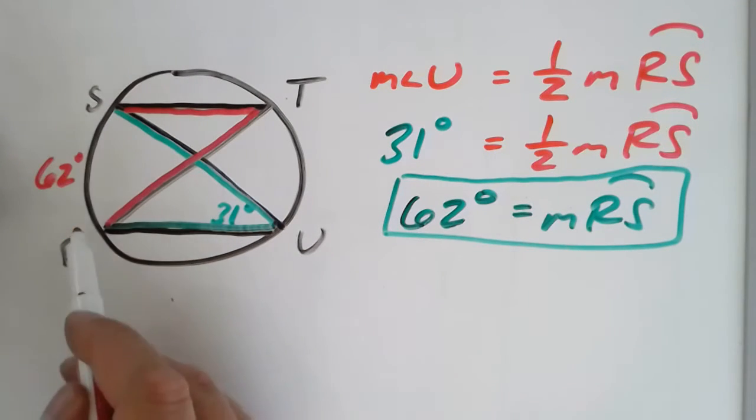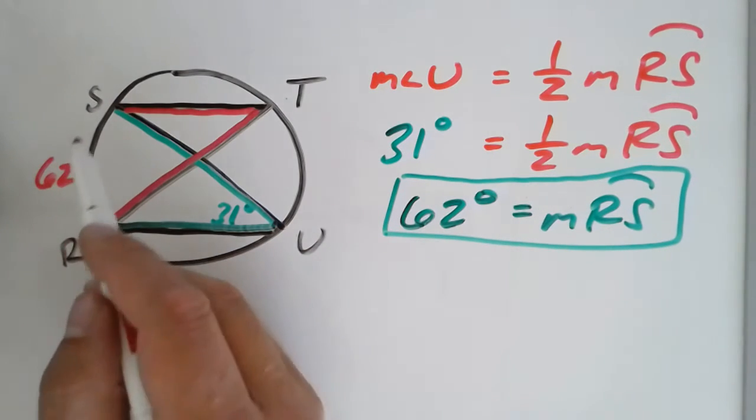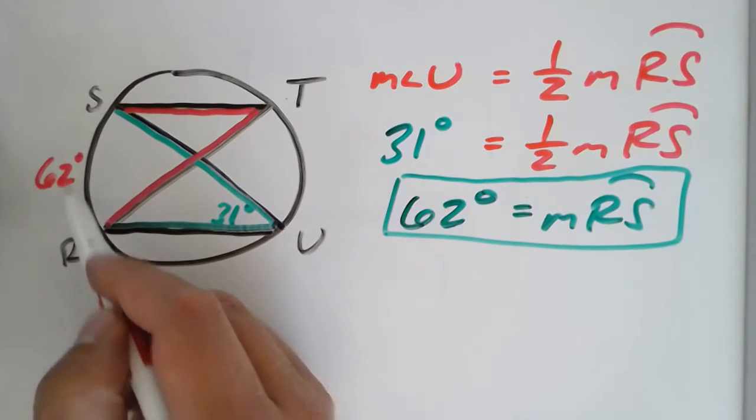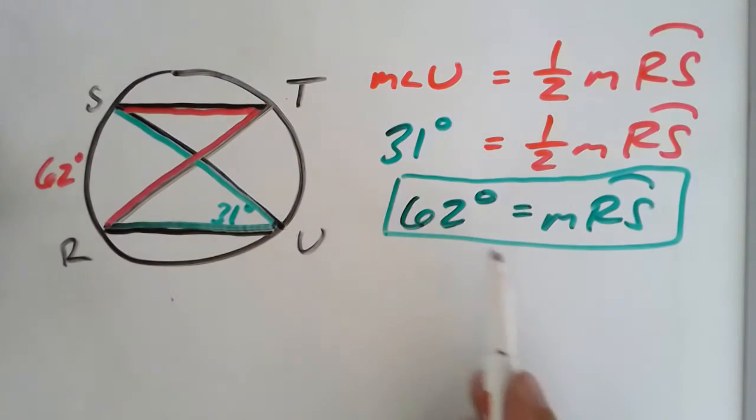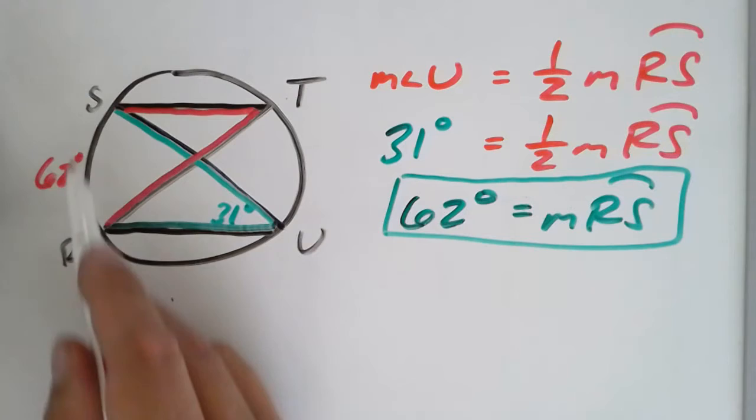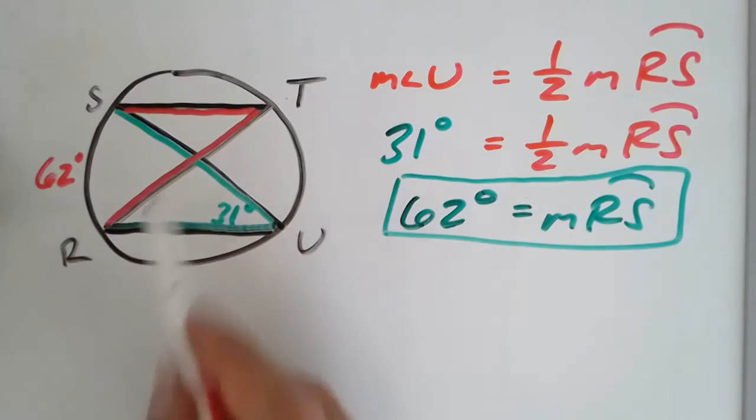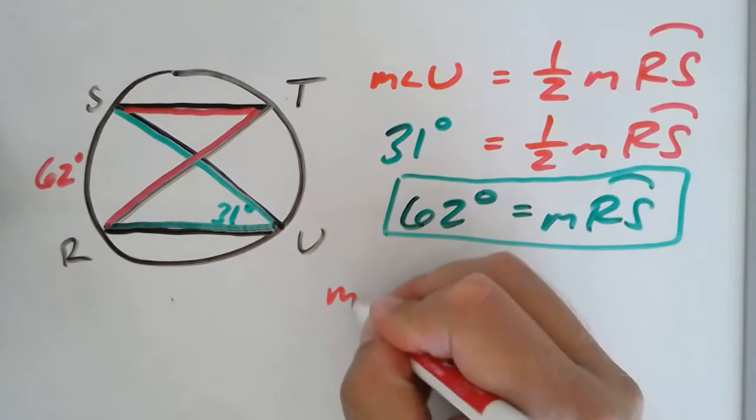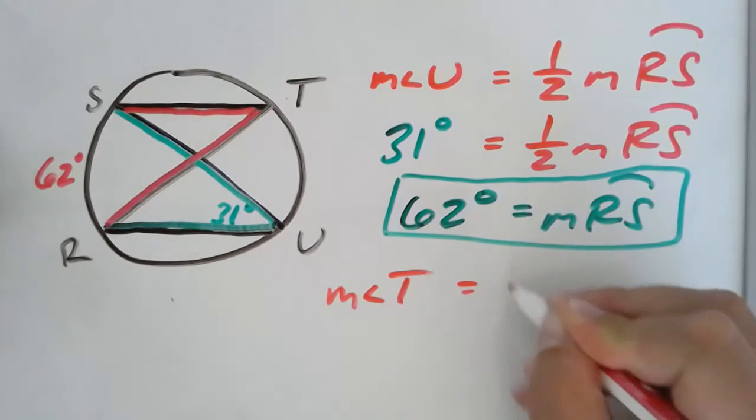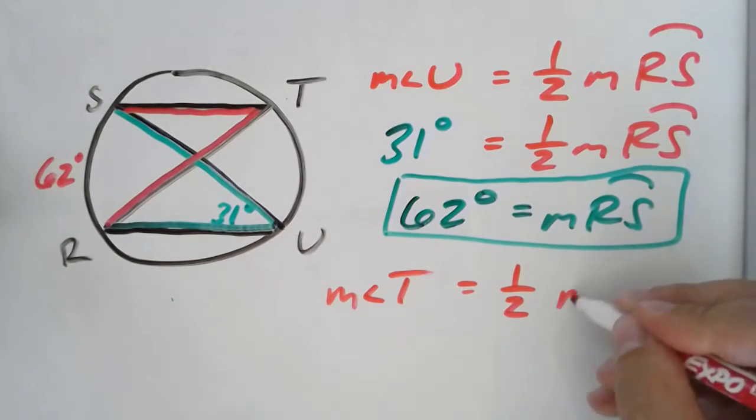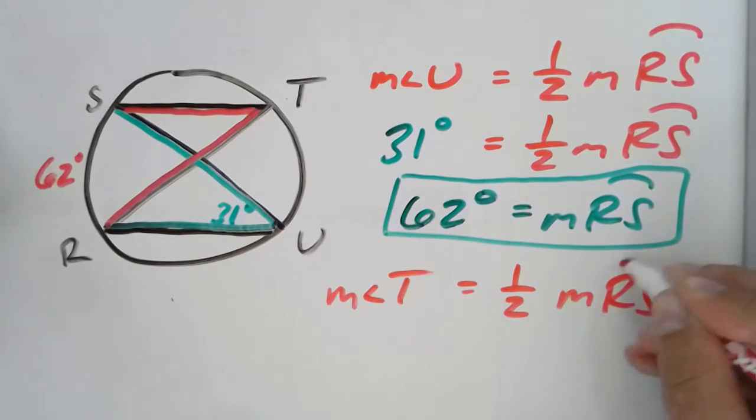Meaning that arc SR, arc SR, arc RS or SR, it doesn't really matter. But arc RS, what I just solved for, is the same intercepted arc for this angle. And just to show geometrically how I'd write that, again, in this case, I'd say measurement of angle T is now one half of its intercepted arc. It just happens to be the same intercepted arc.